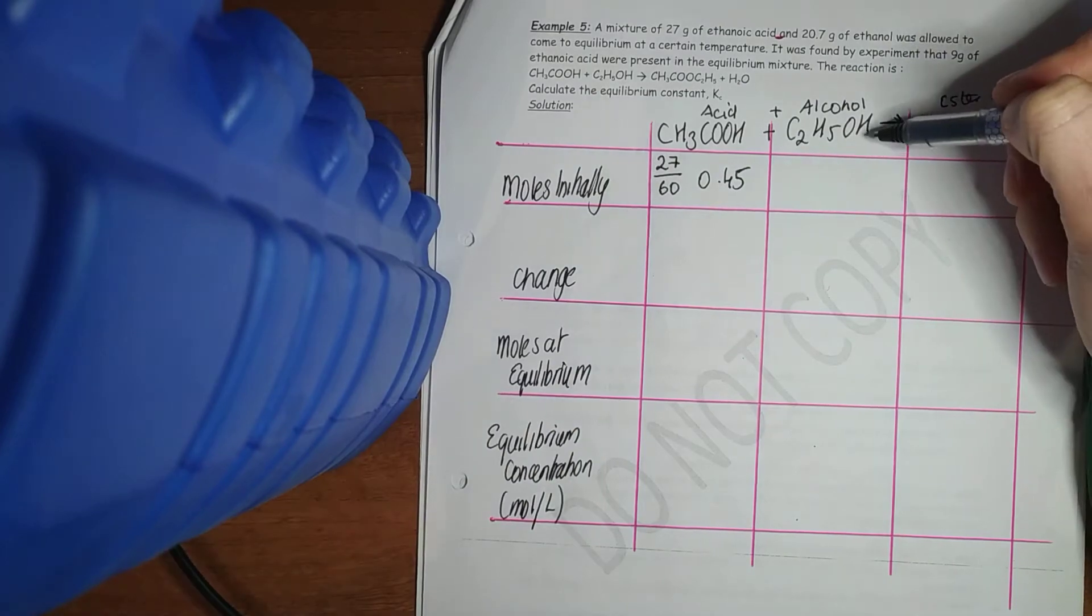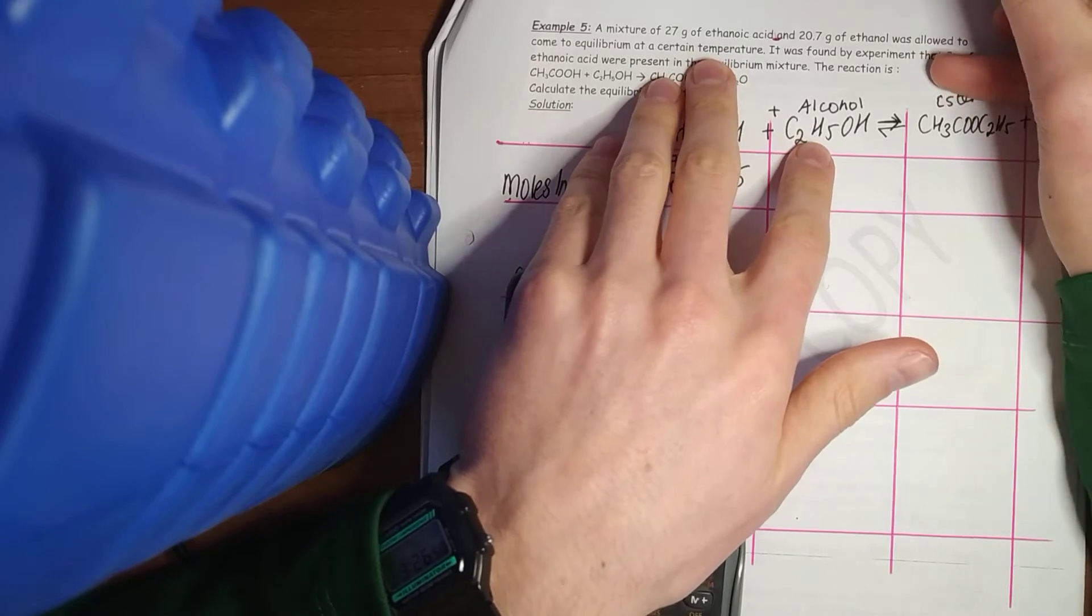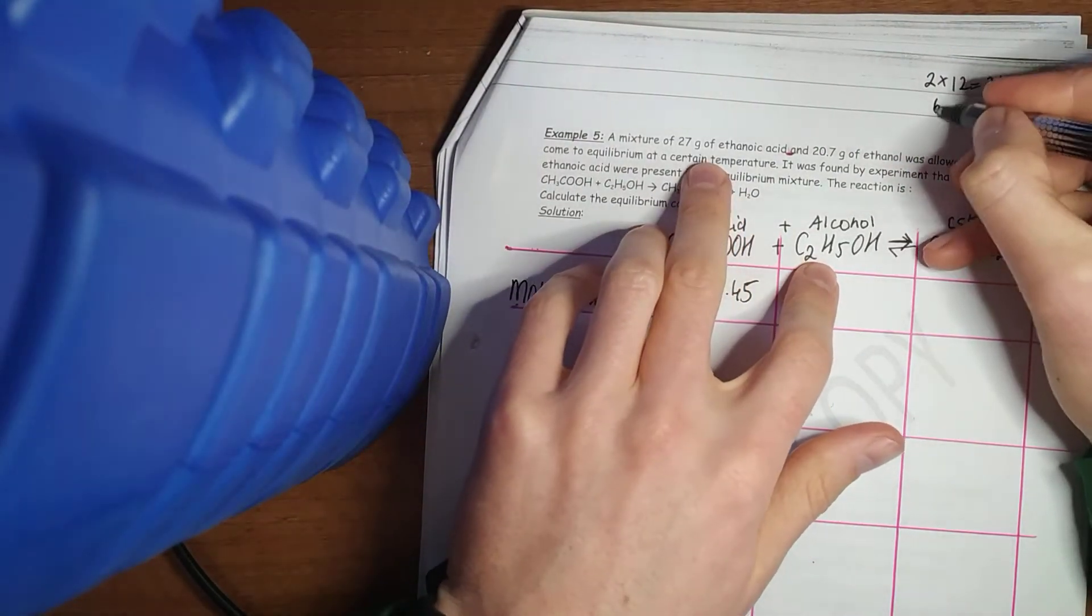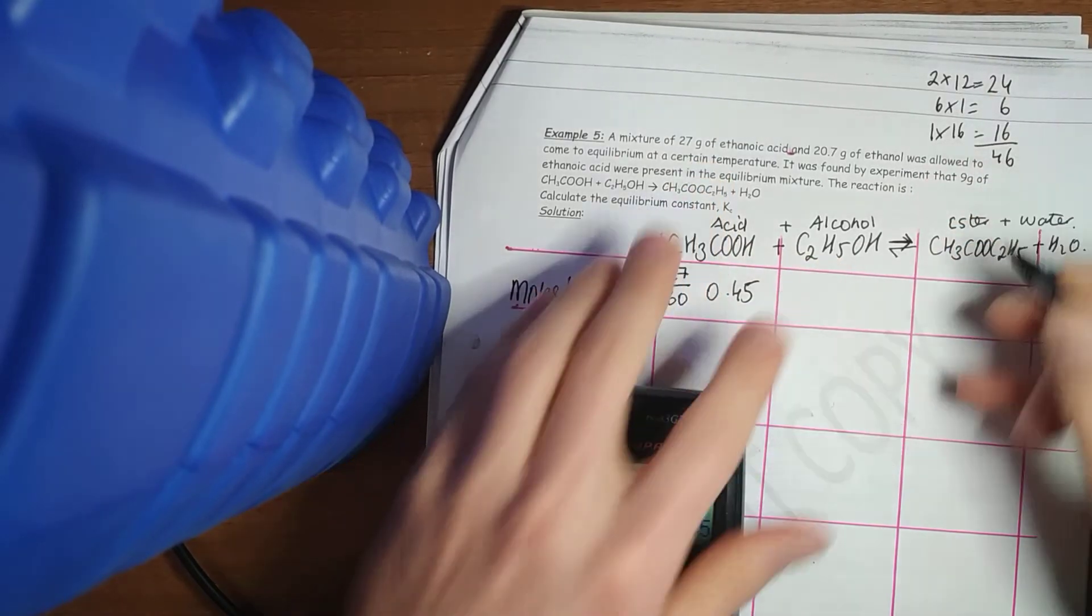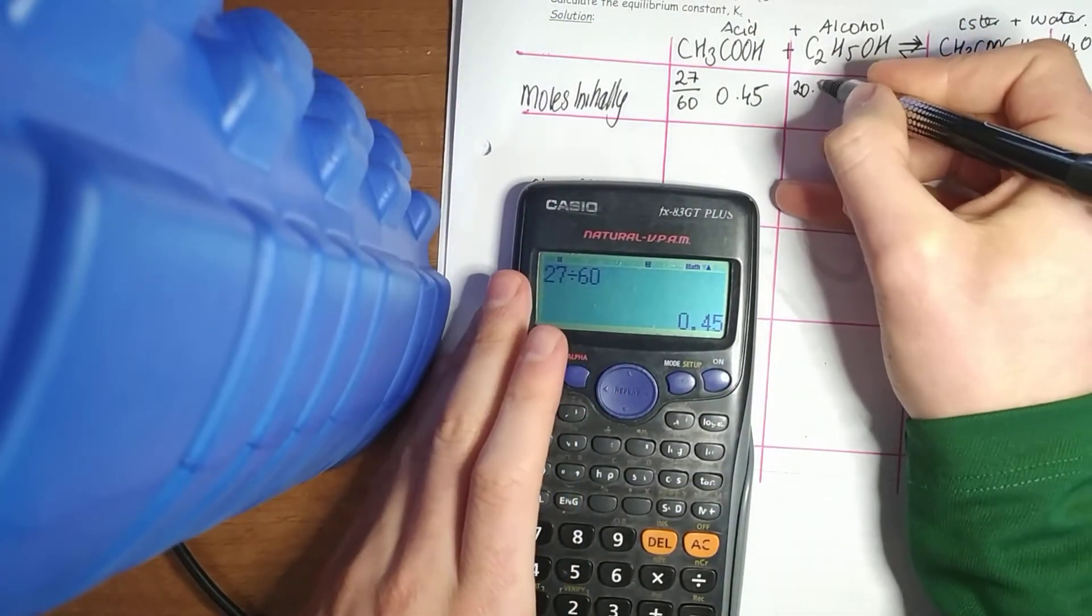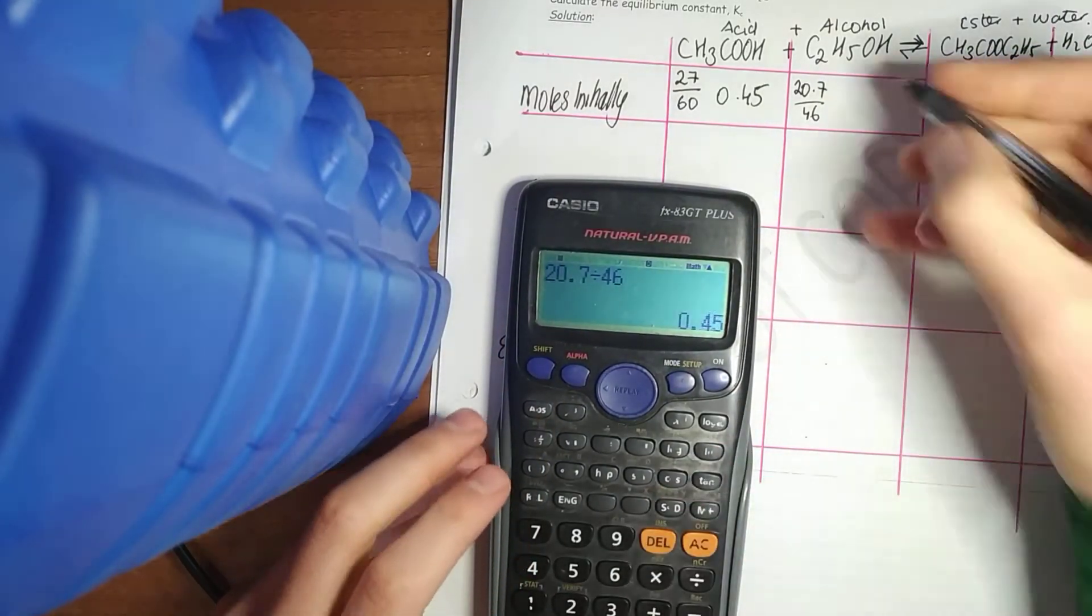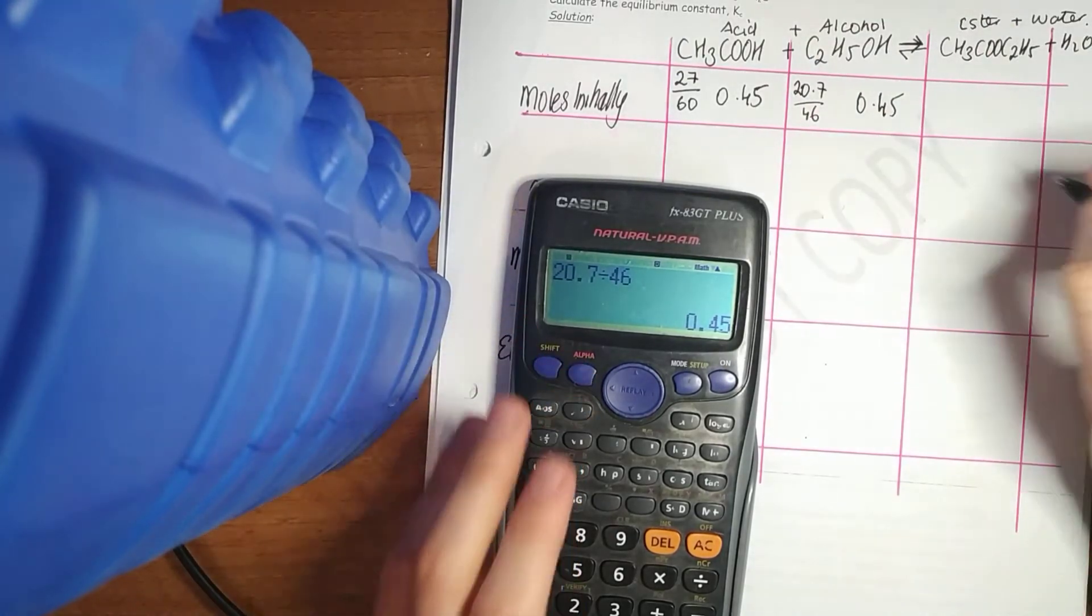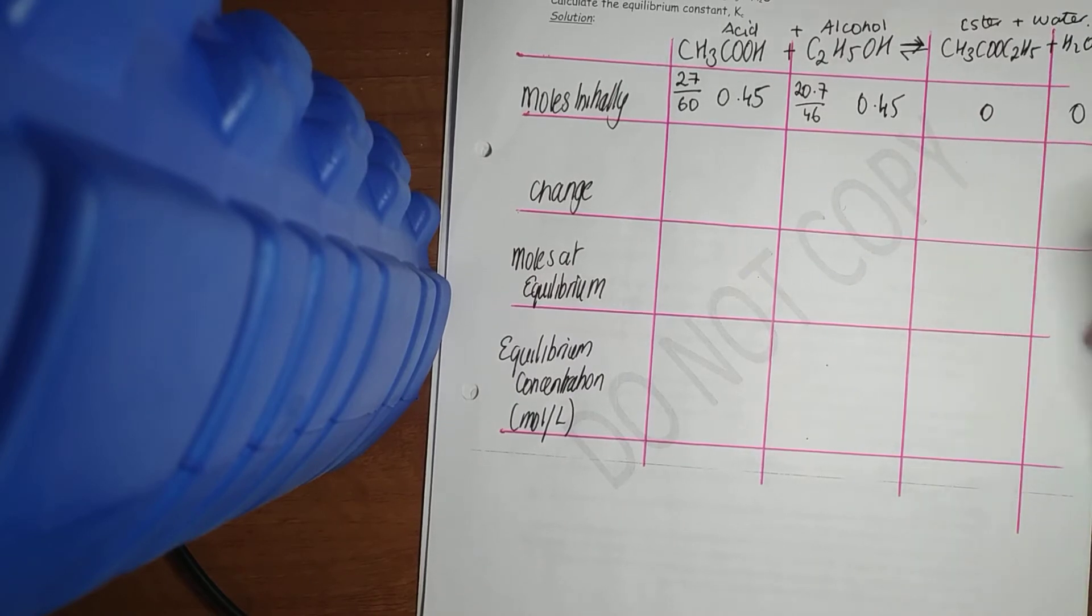And 20.7 grams of ethanol. Ethanol I don't remember off by heart. 2 by 12 is 24, 6 by 1 is 6, and 1 by 16 is 16. It's 46. So 20.7, back to moles you divide that by 46, and you get 0.45. Same number of moles, same ratio. None are limited or in excess. How much product you have? 0 and 0 at the start.